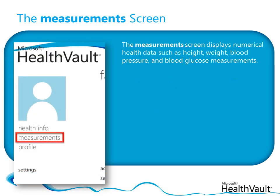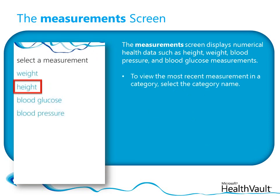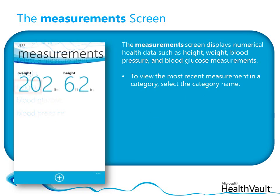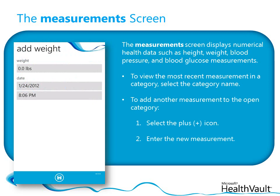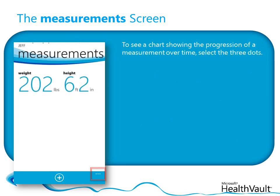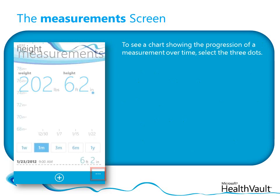The Measurements screen displays numerical health data from the HealthRecord, such as height, weight, blood pressure, and blood glucose measurements. To see the most recent measurement in a category, click the category name. To add a measurement, select the plus icon at the bottom of the screen, select the measurement type that you want to add, and then enter the measurement before selecting the save icon. Each measurement that you add is automatically saved with its date and time of entry, so that you can keep track of changes in the numbers over time. You can select the three dots in the lower right corner to see a chart of the measurement's progression over time.